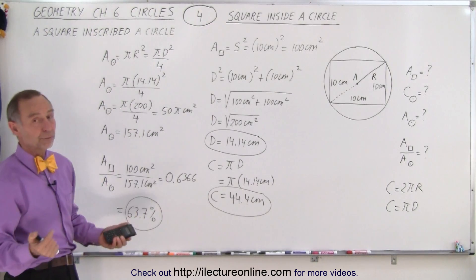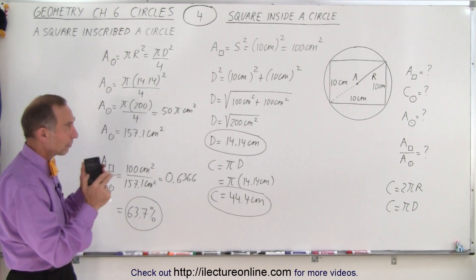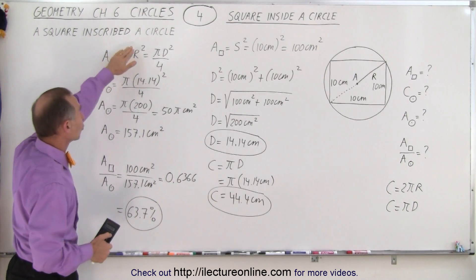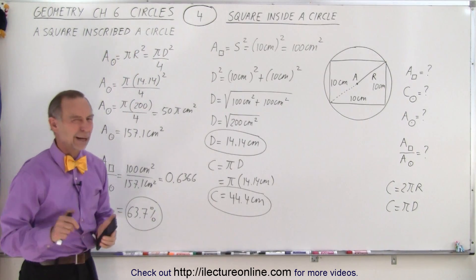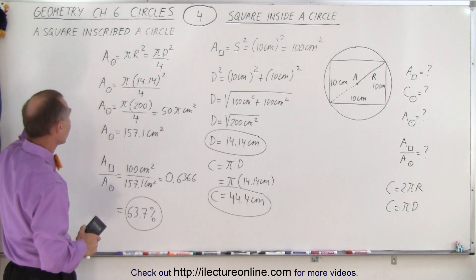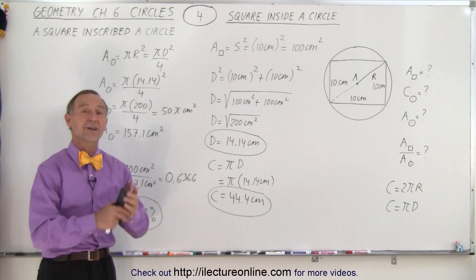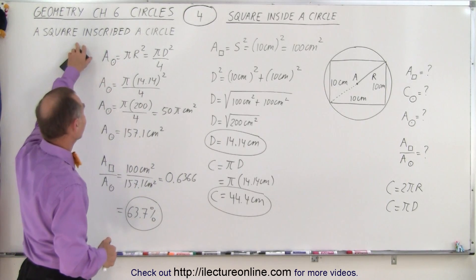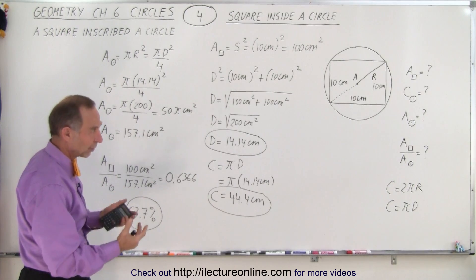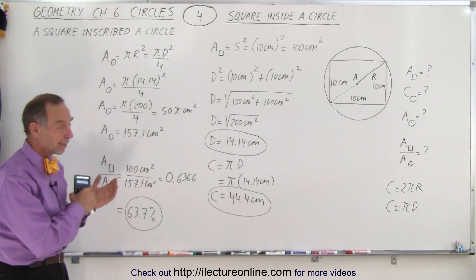That is the ratio of the surface area covered by a square inscribed in a circle, and that will always be the case regardless of the size of the circle or the square, as long as the square fits perfectly inside the circle — that's what we call the square being inscribed in the circle. You should be familiar with that terminology. Regardless of the size, the ratio will always be 63.7 percent, and that is how it's done.